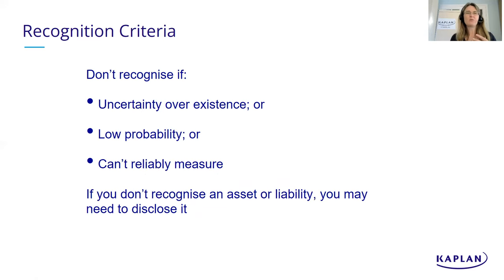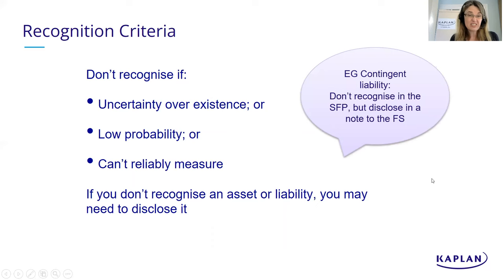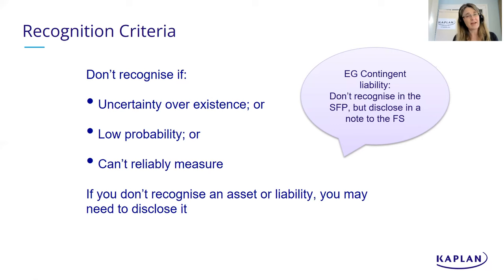When wouldn't you recognise something? If you're not sure of its existence - as may be the case with certain intangible assets. If there's a very low probability of it occurring - for example, someone suing you where there's very little chance they'll win. Or if you can't put a reliable number on it. If you don't recognise an asset or liability, you might instead include a disclosure note - for example, a contingent liability, which by definition is a possible future payout with too much uncertainty around timing or amount.